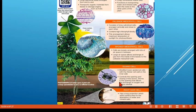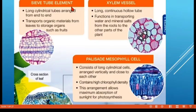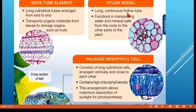The first plant cell type is the sieve tube element — its structure is a long cylindrical tube arranged end to end; its function is to transport organic material from leaves to storage organs such as fruits. We also have xylem vessels — their structure is a long continuous hollow tube. Their function is to transport water and mineral salts from the roots to other parts of the plant, which is why the structure is continuous from the roots up through the stem and leaves.